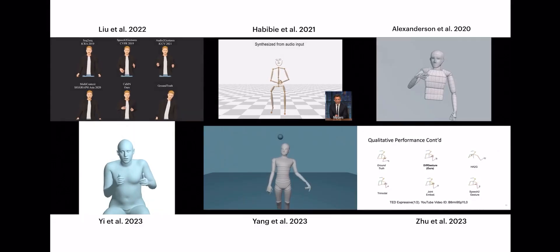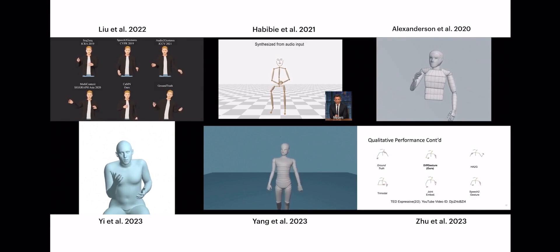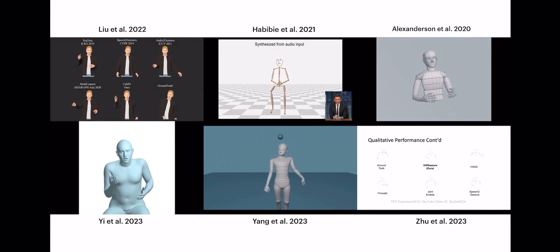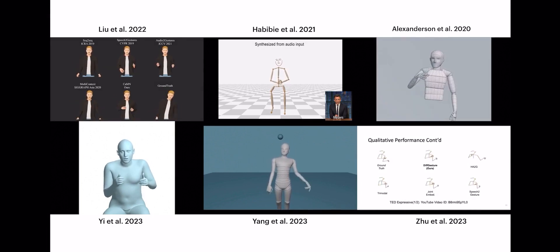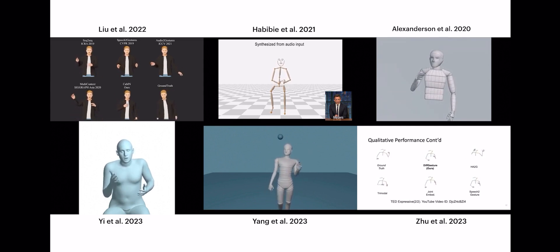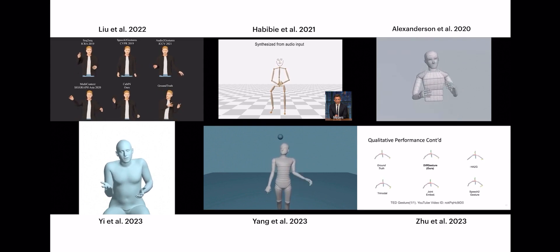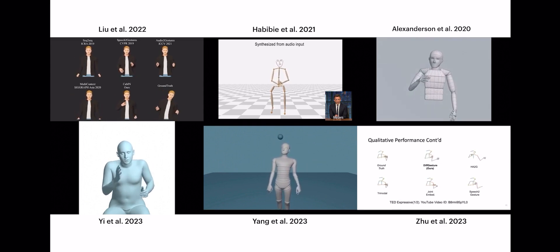Generating gestures solely from speech with emotional control is a difficult task. Existing methods for synthesizing 3D human gestures from speech have shown promising results, but they do not explicitly model the impact of emotions on the generated gestures. Instead, these methods directly output animations from speech without control over the expressed emotion.